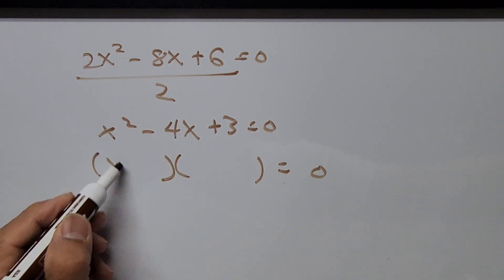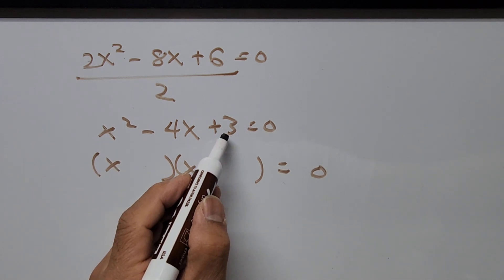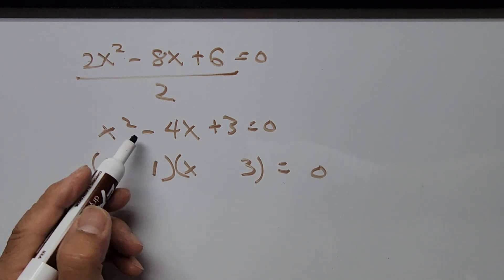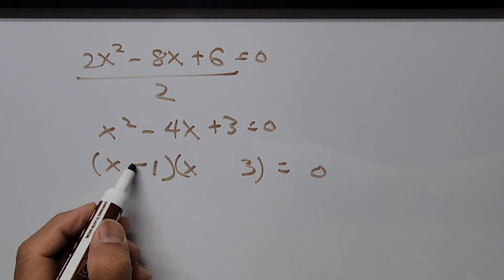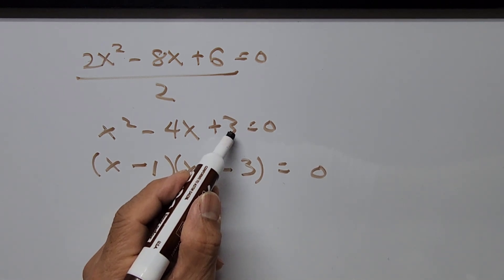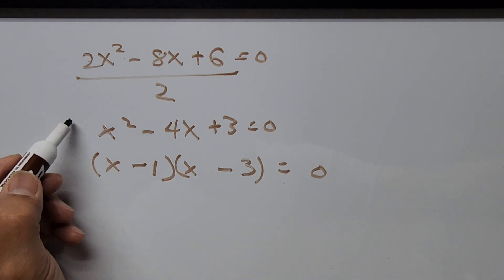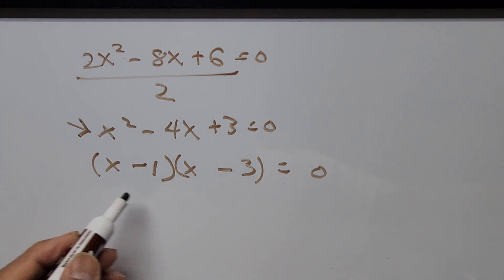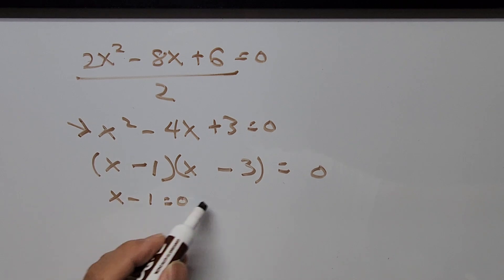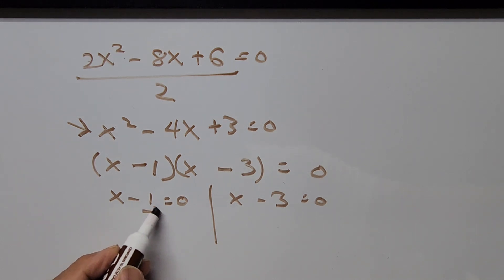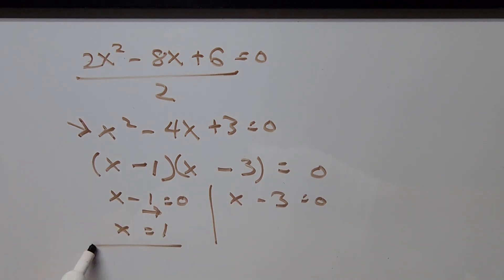Now we can factor X squared minus 4X plus 3 more easily. The factors of X squared are X and X. The factors of 3 are 3 and 1. Since the middle term is negative, both factors are negative: (X minus 1)(X minus 3) equals 0. Setting each factor to zero gives X equals 1 and X equals 3 — the same answers.